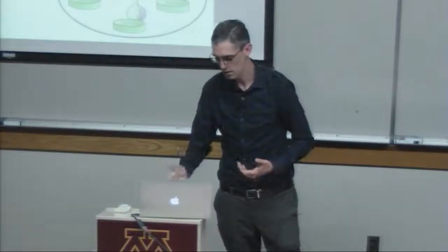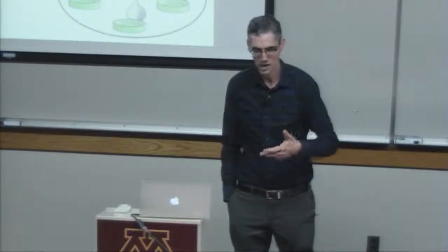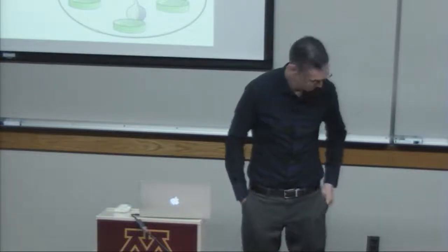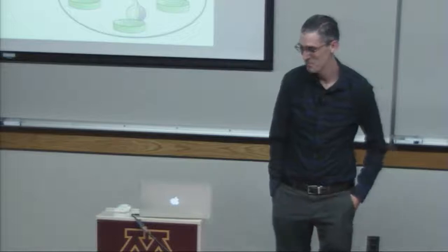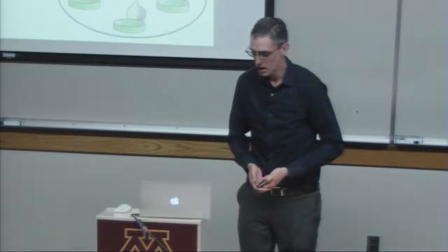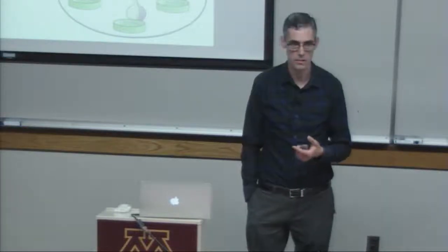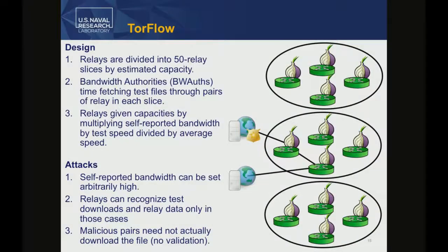This is obviously not all that secure. You're multiplying by self-reported bandwidth, so you can set it arbitrarily high and get whatever multiple the measurement produces times that. Another issue is you may be able to tell you're being measured—in TorFlow it's very easy because the bandwidth authorities are well-known and hard-coded, and the downloaded test files are also easy to identify. So you can just send traffic only when being tested and never otherwise, making it very cheap for yourself. TorFlow also didn't validate that you were actually sending the file it requested, so if you controlled the entire circuit, you could skip the download and save half the cost.